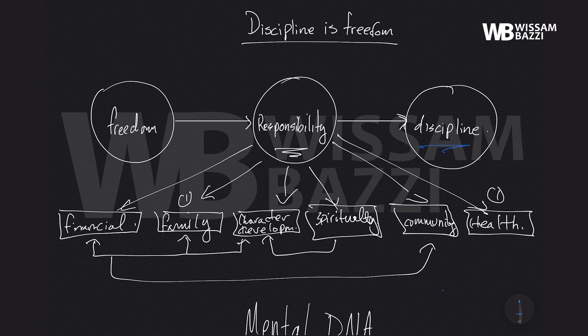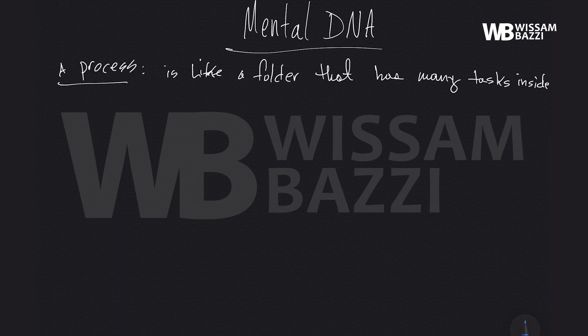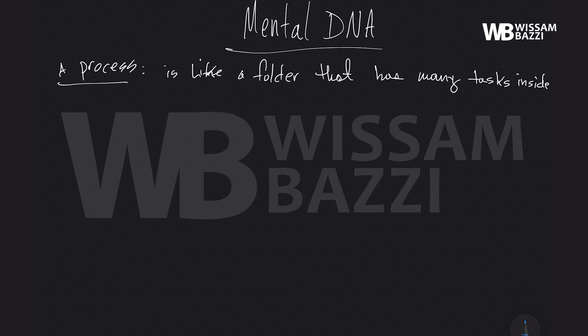Building mental DNA requires discipline. Mental DNA is literally the processes that you have in your mind. For example, when you learn how to ride a bike, or when you learn how to read or write — these are all processes you develop in your mind. An incomplete process would be learning only 14 letters of the alphabet. You won't be efficient; you won't be able to make the words you need. A process is a folder that has many tasks inside of it.